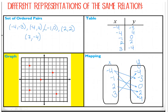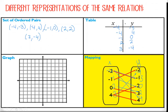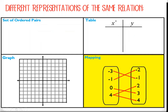The next thing we're going to look at is: what if I have a mapping? How do I go from a mapping to the other three? I'm going to pause the recording again — I want you guys to take a second and try to go from a mapping to a table, ordered pairs, and a graph.